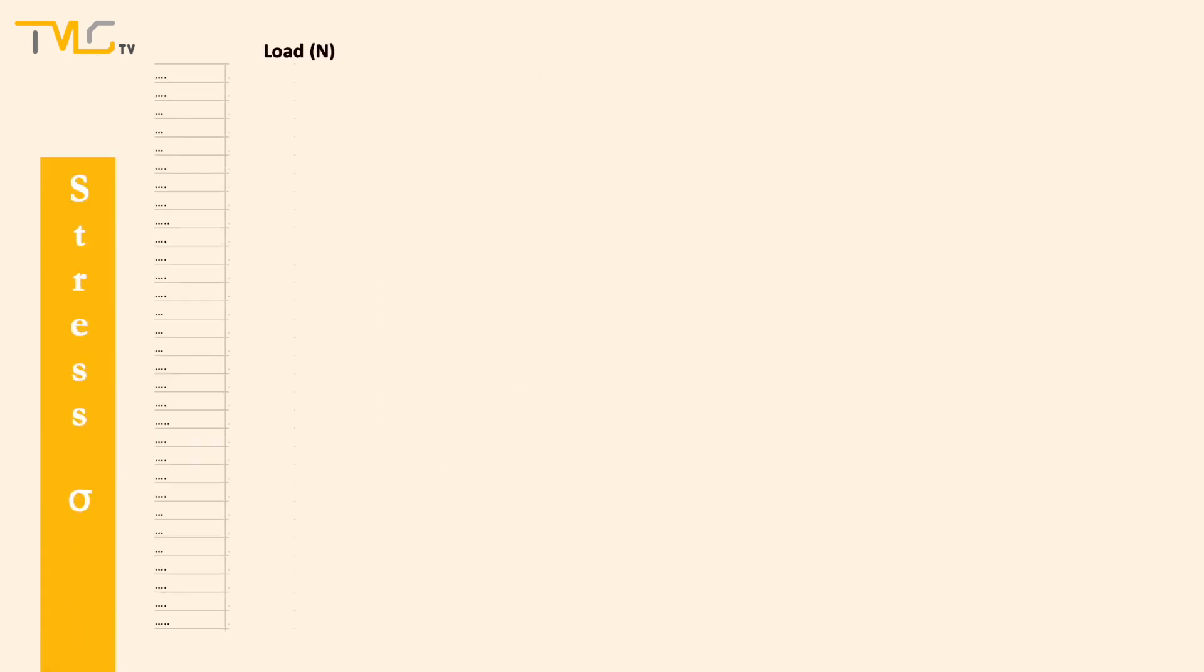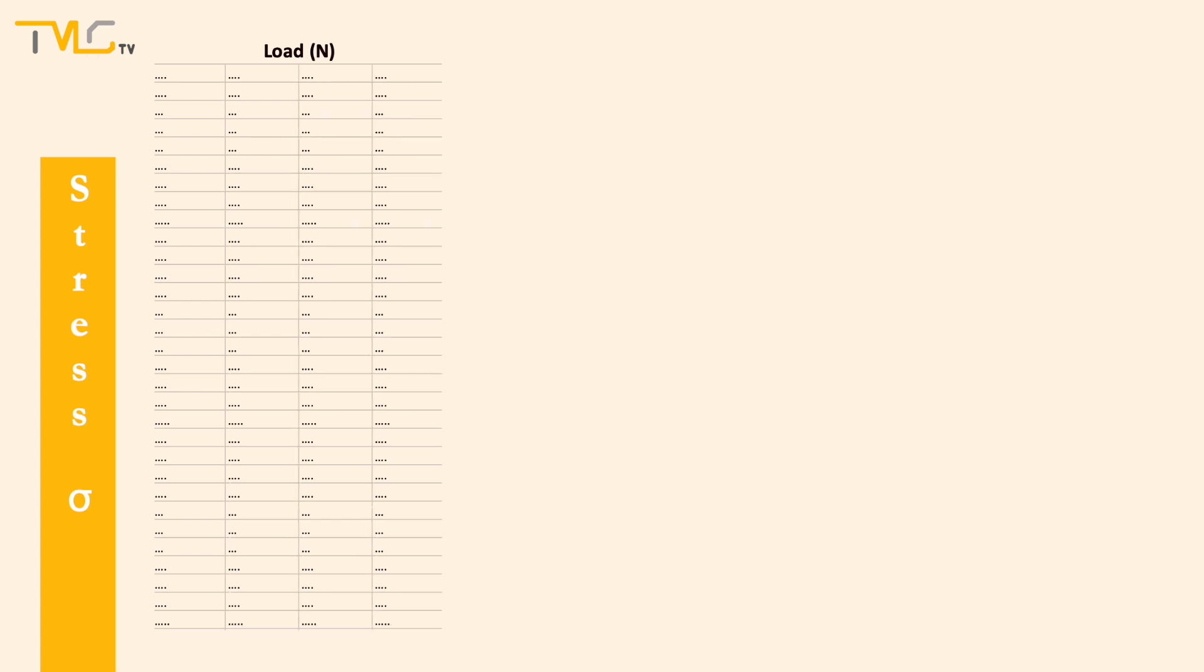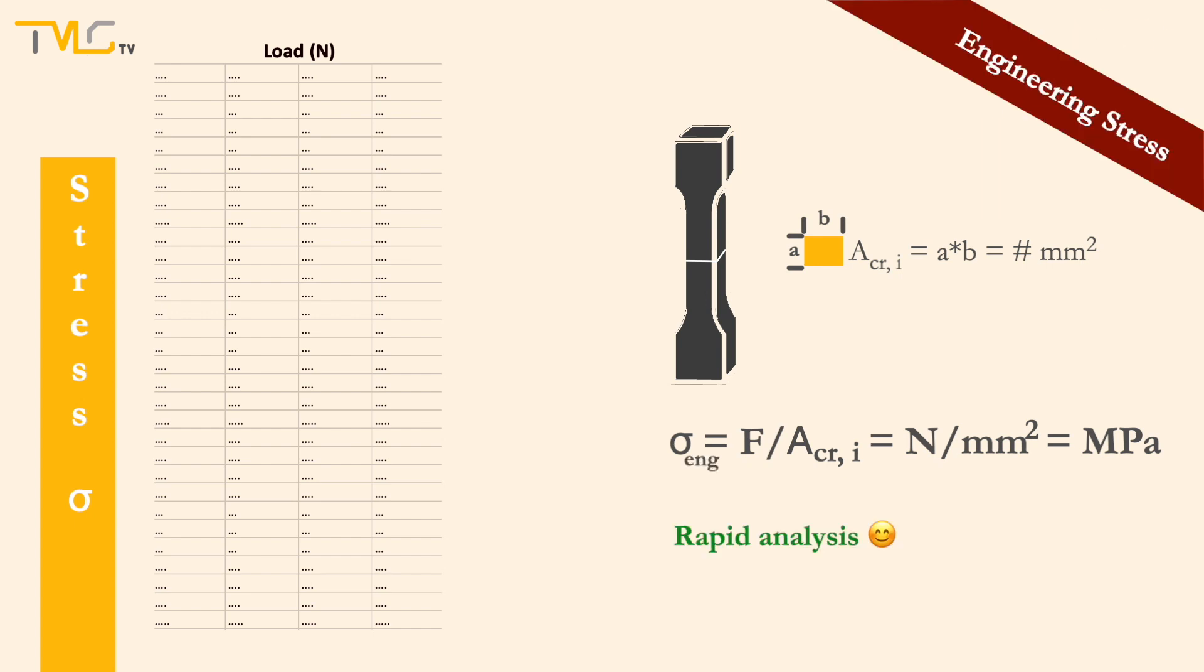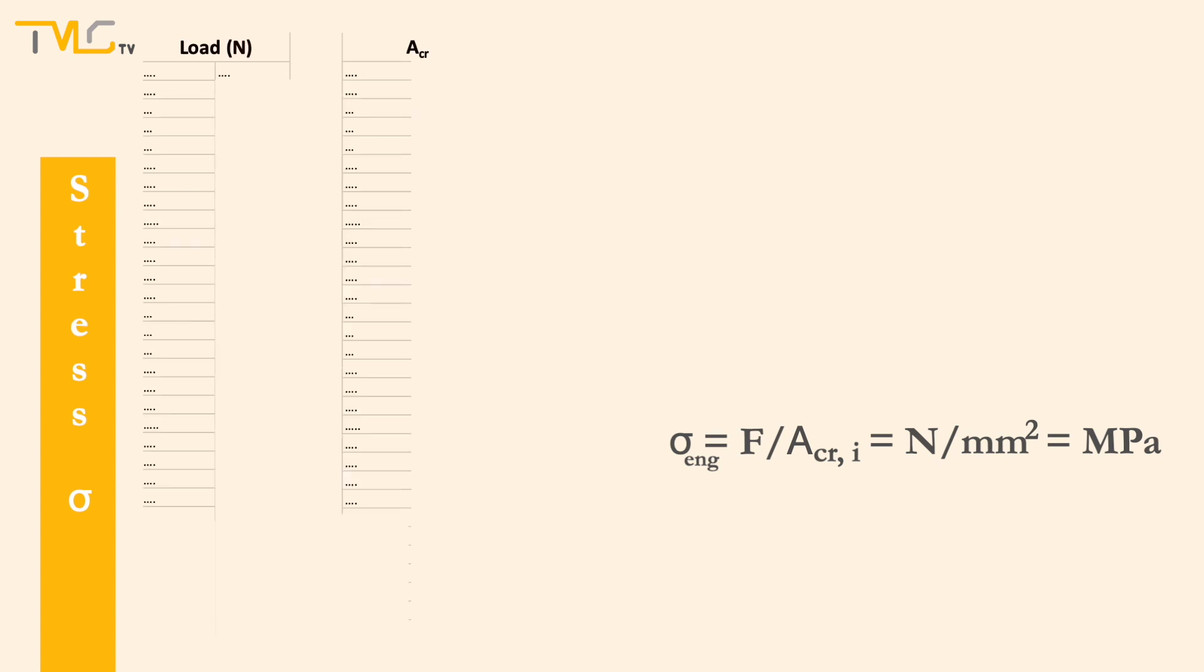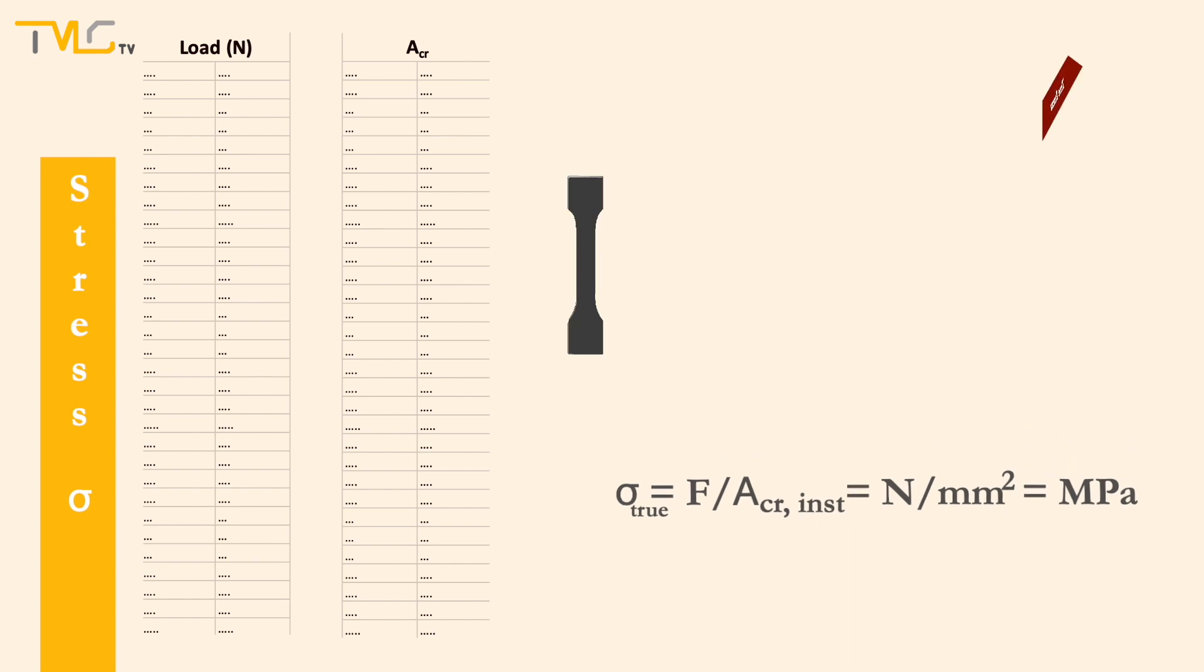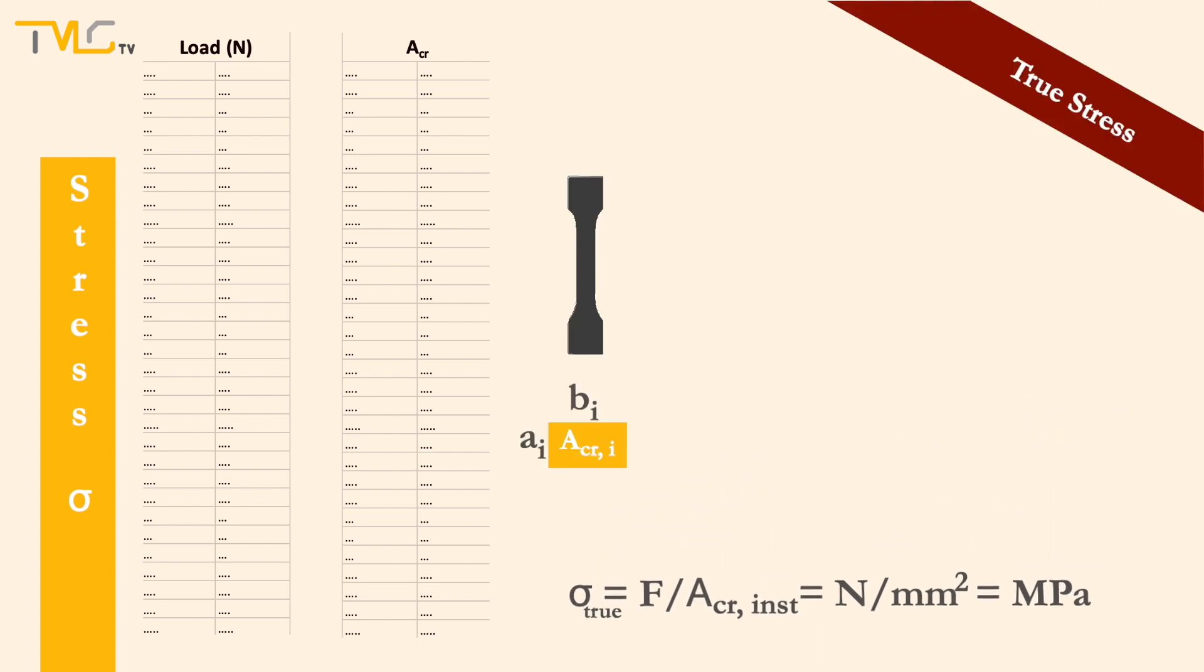Stress is calculated by dividing the recorded loading values to the initial cross-sectional area. The stress value calculated by this method is called the engineering stress, which allows rapid analysis but has low accuracy. In order to achieve higher accuracy in stress calculations, the instantaneous cross-sectional area is used instead of the initial cross-sectional area of the specimen. The stress value calculated by this method is called the true stress.